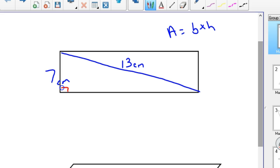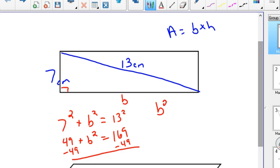What you'd use in this case, since this is a right triangle, we're going to use Pythagorean theorem to come up with this base. So it would be 7 squared plus b squared equals 13 squared. 49 plus b squared equals 169, and then you just keep solving. Subtract the 49 over, so b squared equals 120.